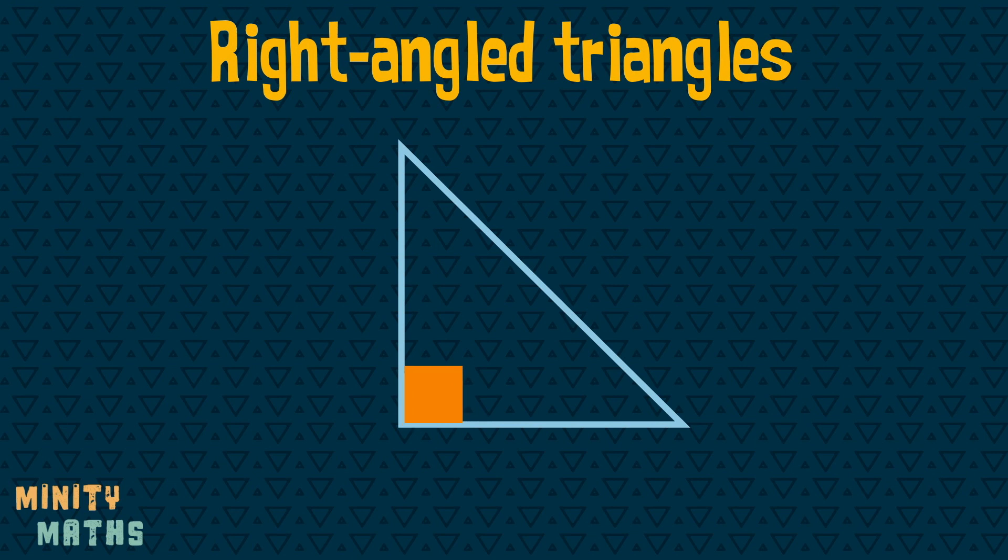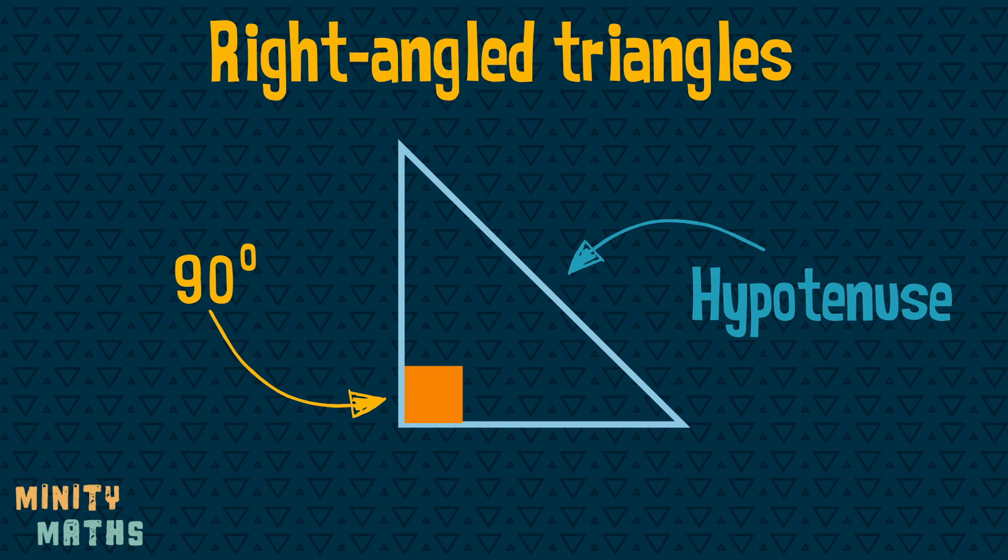Right-angled triangles have an angle of 90 degrees. The side opposite the right angle is the hypotenuse. This is the longest side.